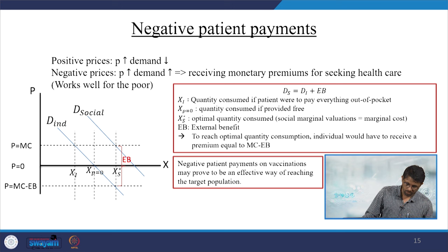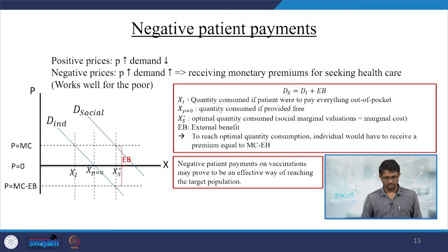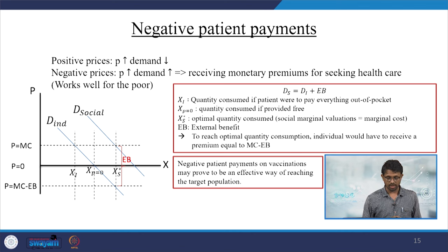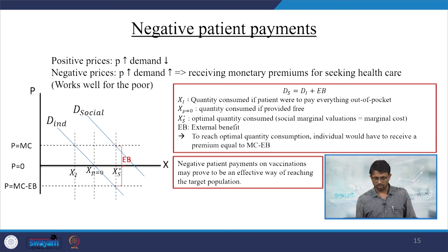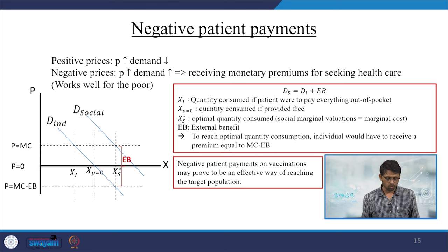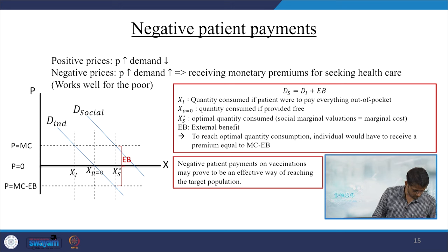When there are positive prices, if p increases demand falls. With negative prices, if p increases demand also increases — this represents receiving monetary premiums for seeking healthcare, and this works well for the poor. More details can be found in unit number 7.